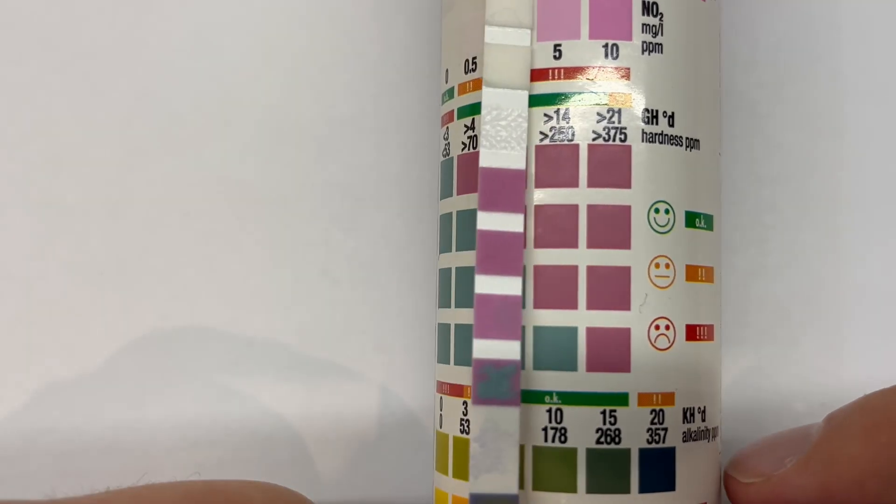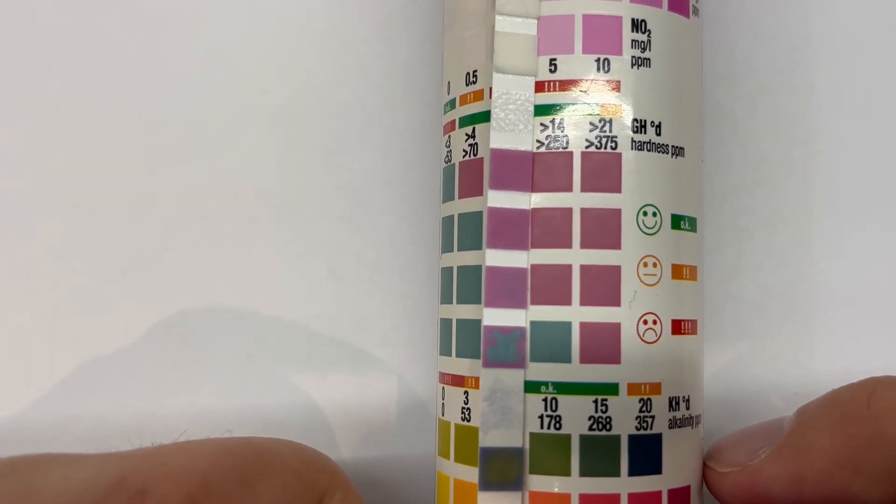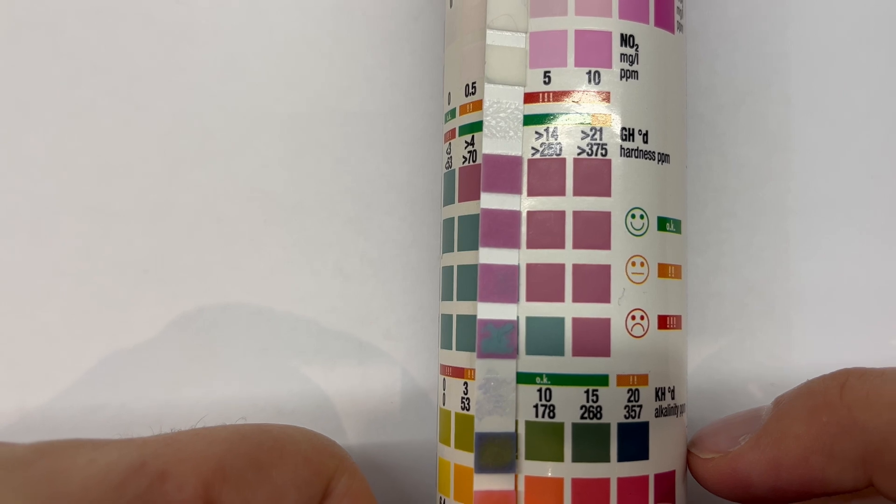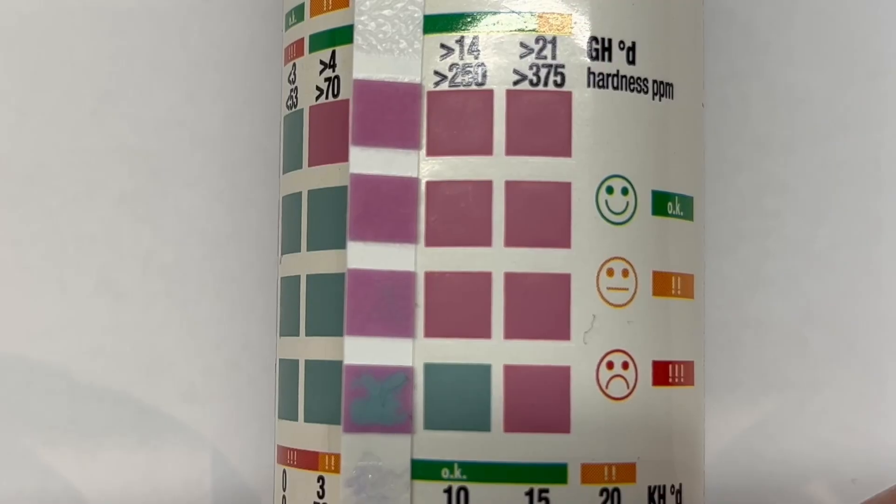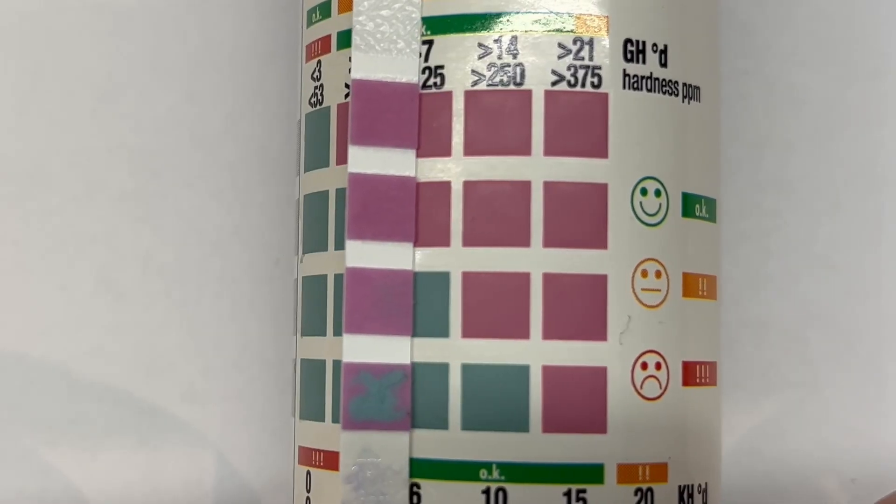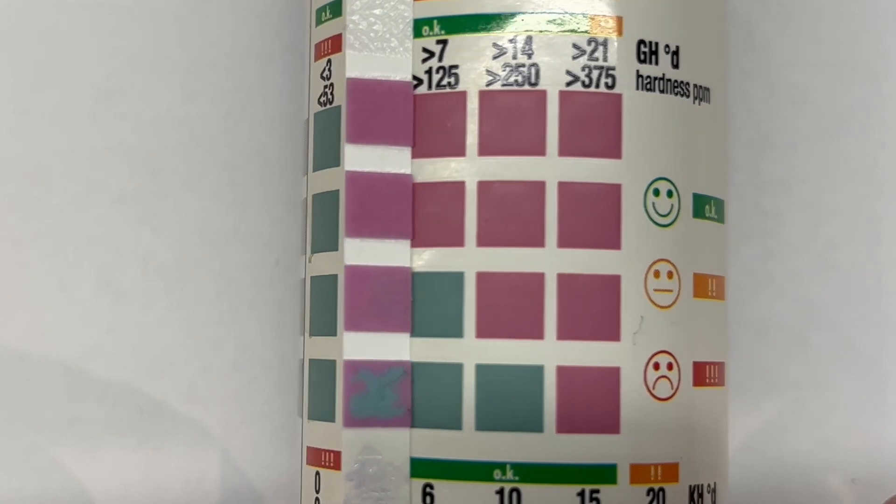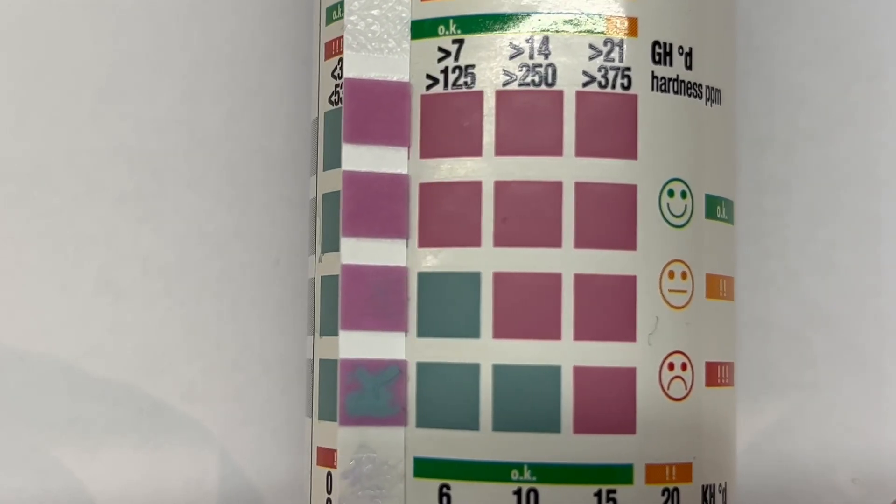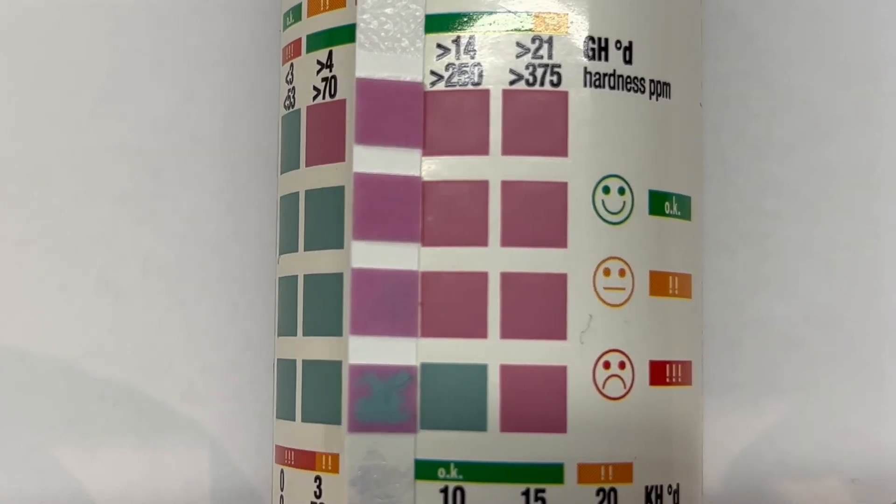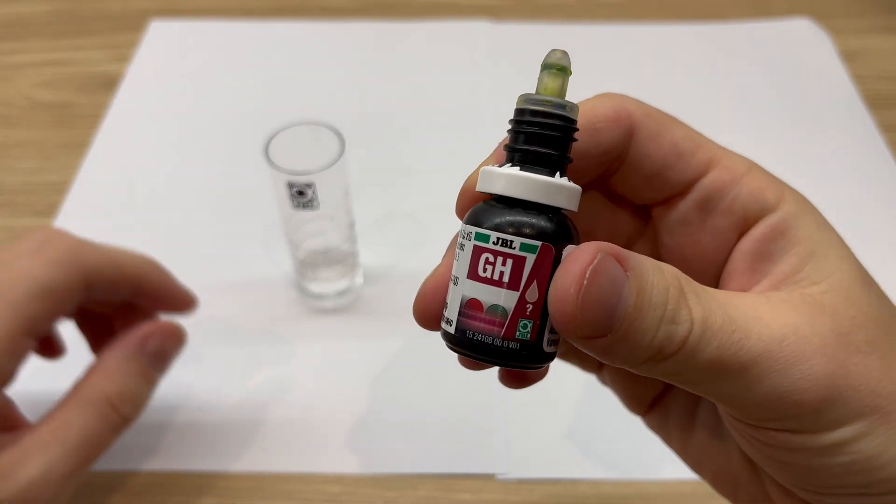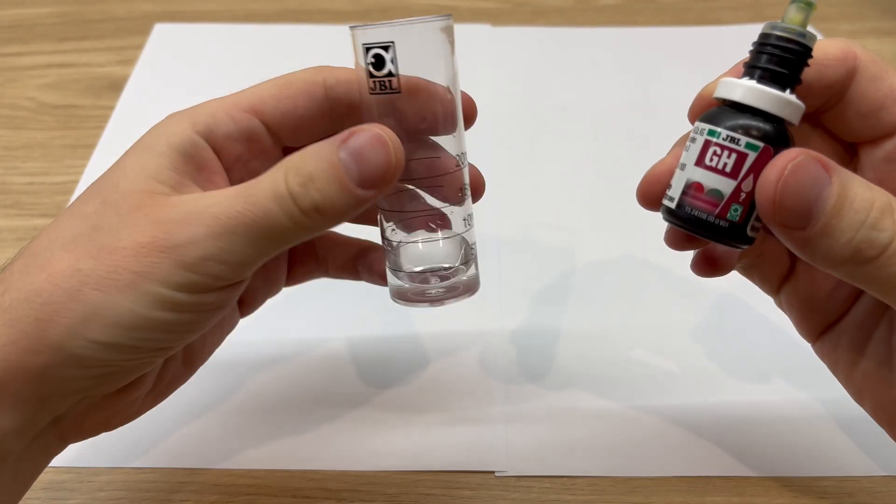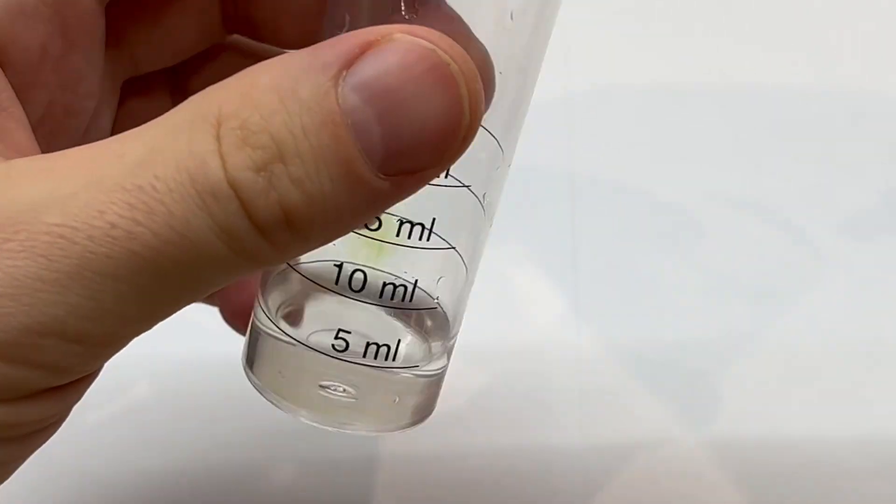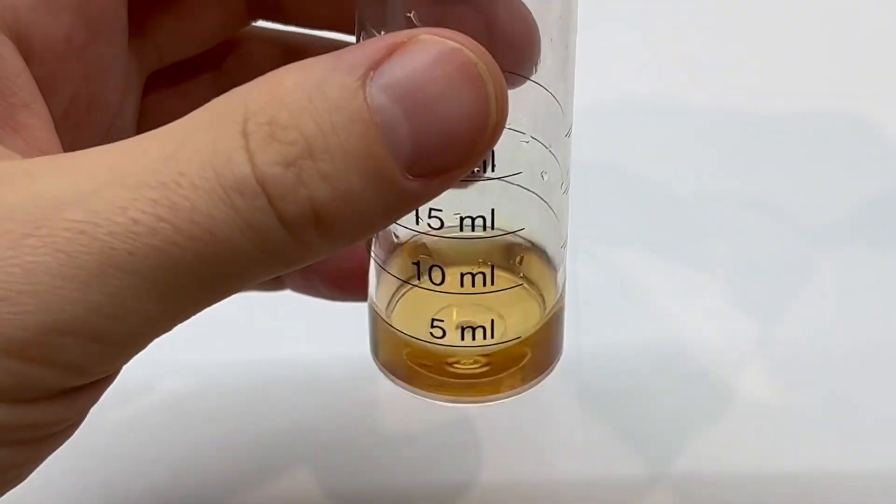So if you want to measure GH, it looks exactly the same like in case of KH. I don't want to waste your time and repeat everything. Just look into the coloring on the packaging in case of testing stripes. And in case of drop tests, which are far more accurate, we are looking for a change from red to green.